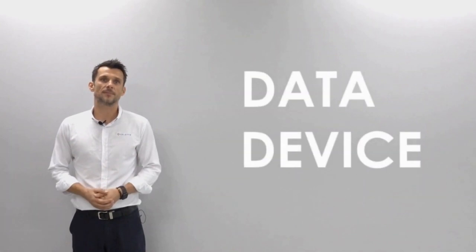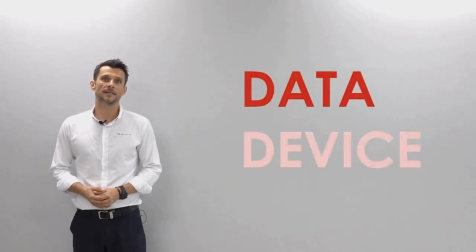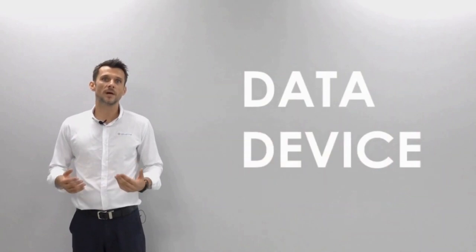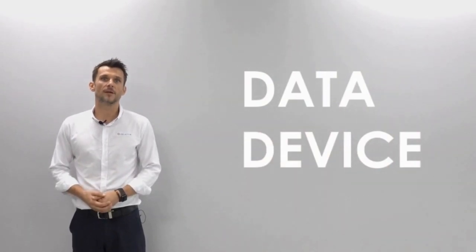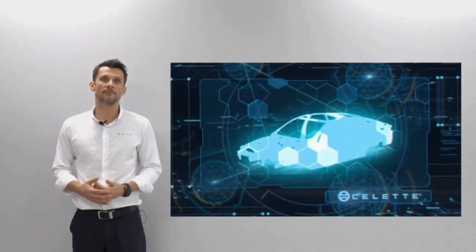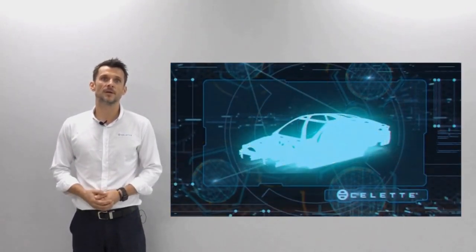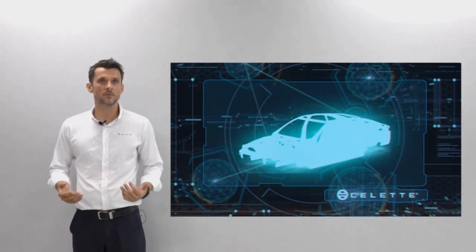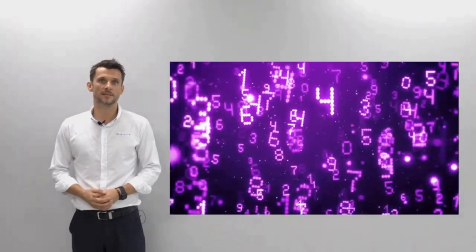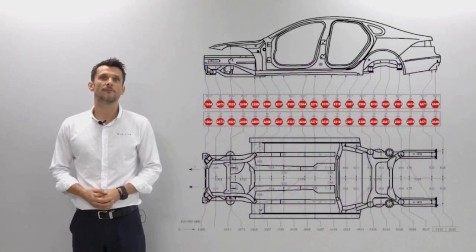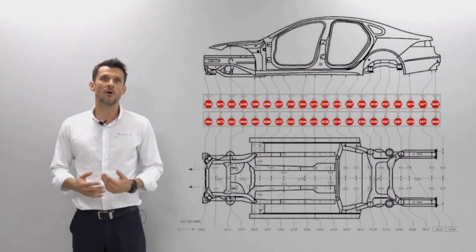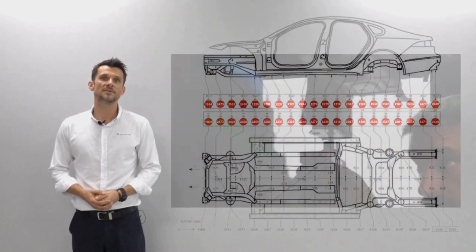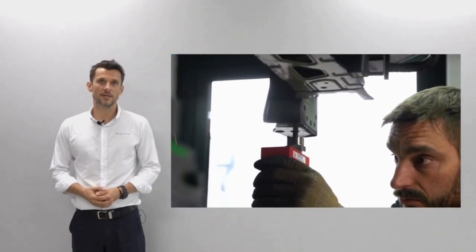There are two main topics: first is the data and the second is the device. So where does the data come from? There are two ways how the data is created. First is when a manufacturer of a measuring system receives 3D CAD drawings directly from OEM. The second one is when a company collects information to build the data — for example using repair manuals often found online, or simply they take a car which is already on the road and measure it with some measuring system.